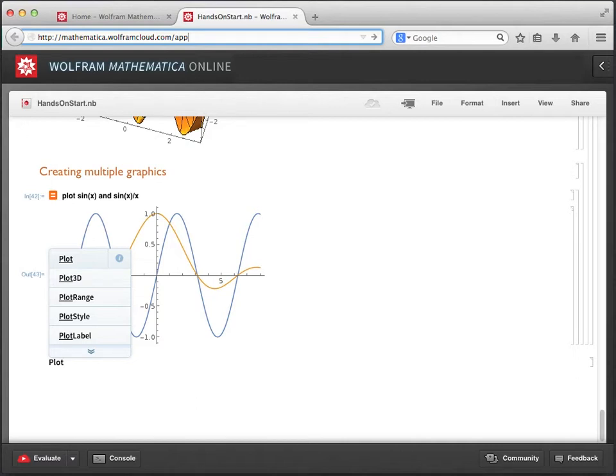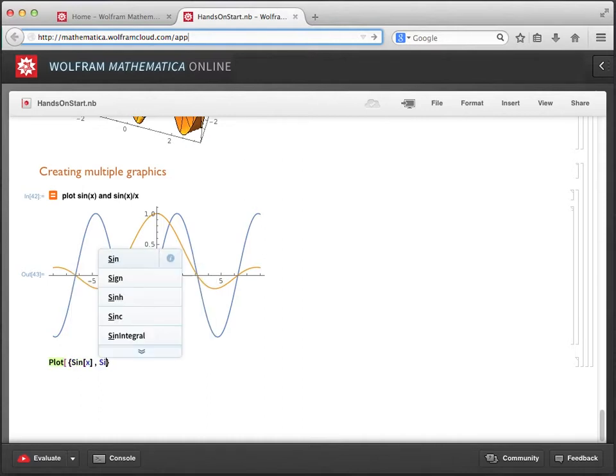And that was one of the cardinal rules of the Wolfram language we discussed a few videos ago. So let's enter plot as the function then create a list using curly braces of the two expressions we want to plot. Sine of x and sine of x over x. And then let's make x go from negative 8 to 8.